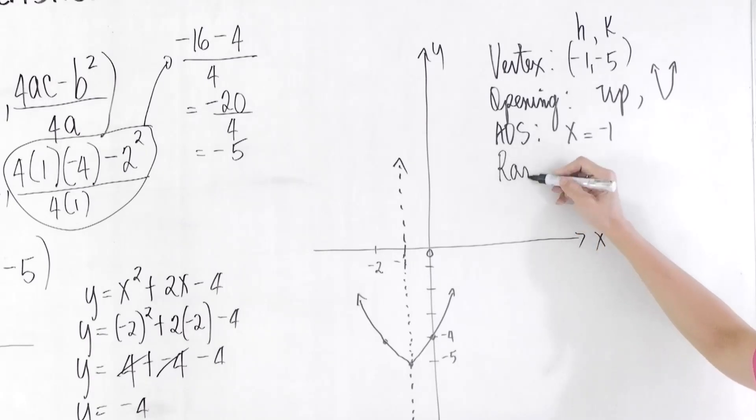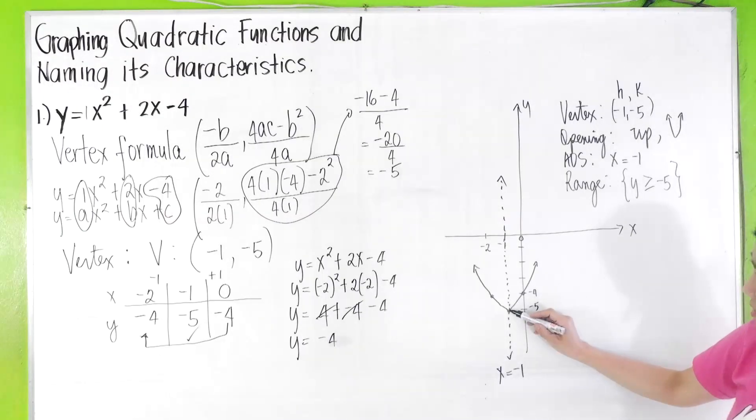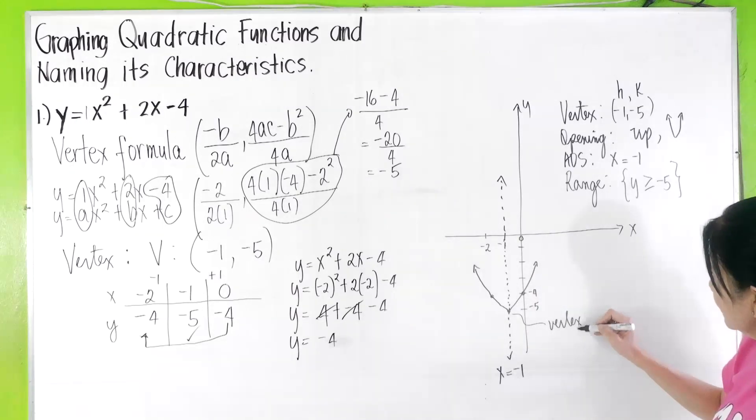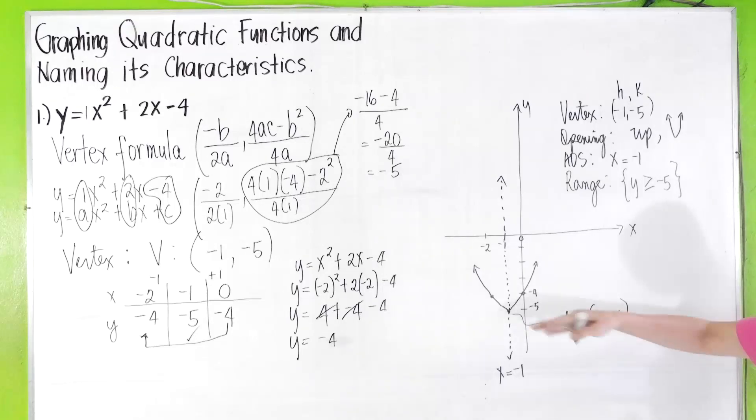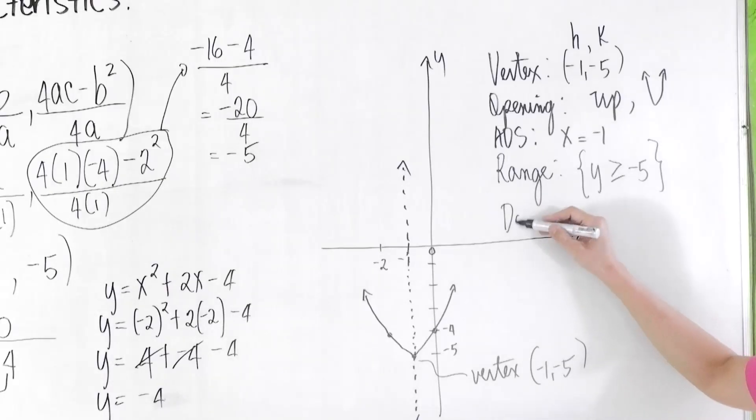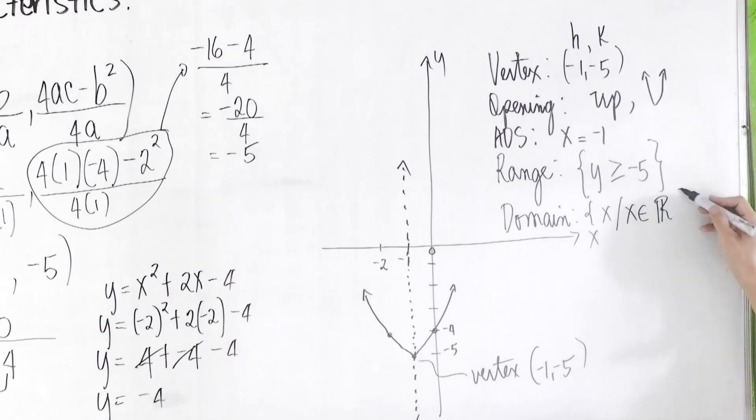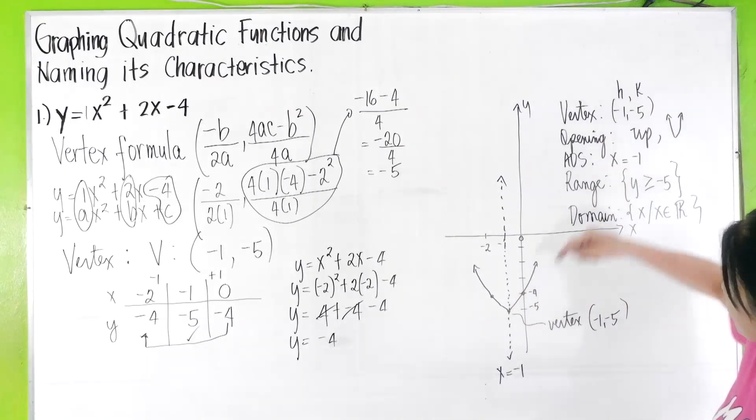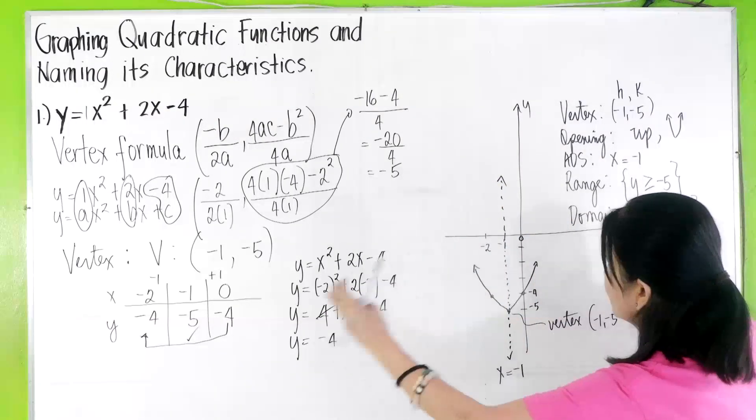And then, your range, as we have learned in my other video, the range will be y ≥ k, to the k value, or -5. From here, remember, this is your vertex. Your vertex here is -1, -5. So your range will be from -5, which is the k value, going up. So you have y ≥ -5. Your domain, domain by definition, is the set of all possible values of x. It will always be x is an element of R. Why? As you can see, your parabola will extend up to the right and up to the left. So it will cover all the x values here.